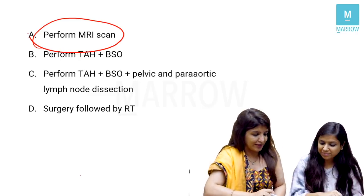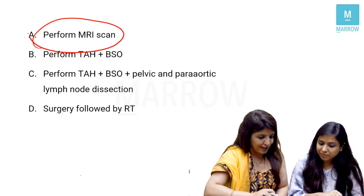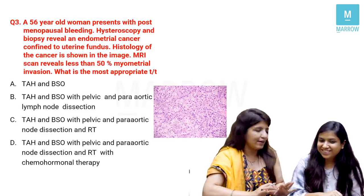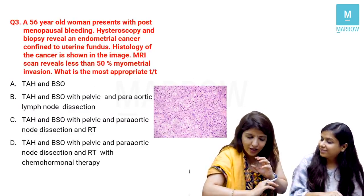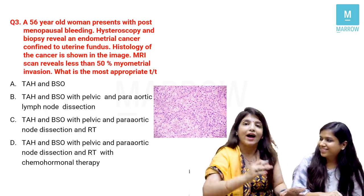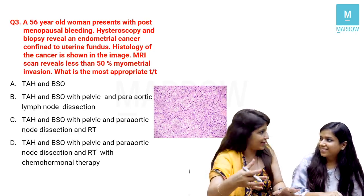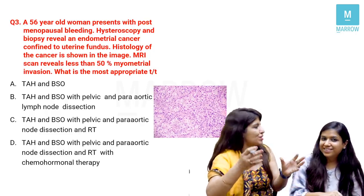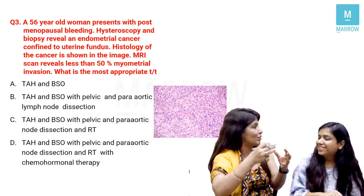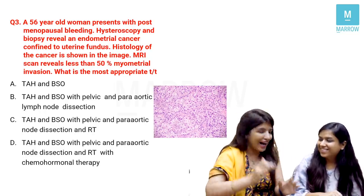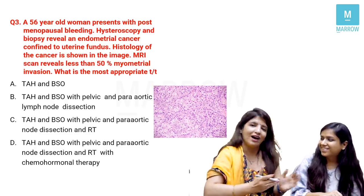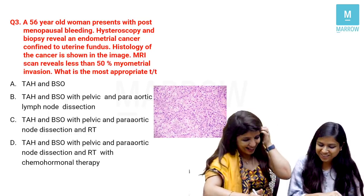The next step in management is to perform an MRI scan because we cannot determine whether lymph node dissection is needed without knowing the degree of myometrial involvement. Thank you to both faculty — earlier in class the terms back-to-back glands and desmoplastic stroma were difficult to visualize, but this integrated session has made their meaning clear.